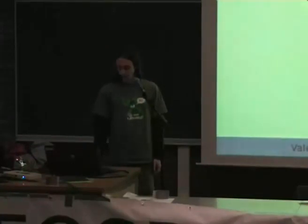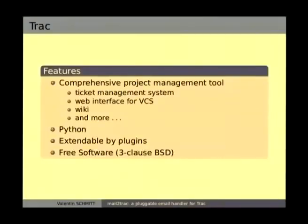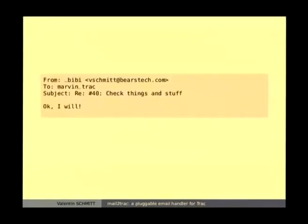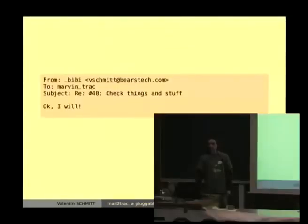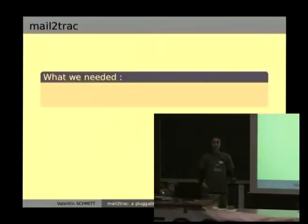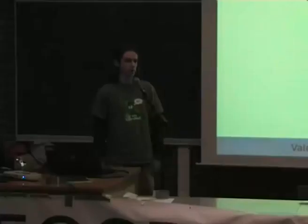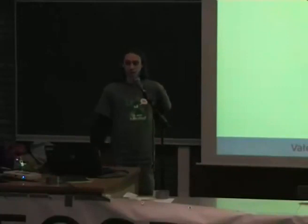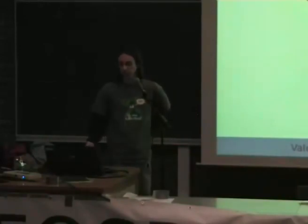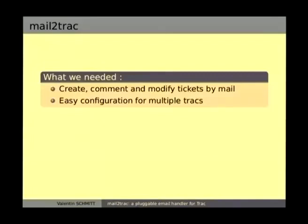About that: you can get email notifications when you're using Trac, which is quite convenient. But if you want to reply to one of these notifications, which is quite intuitive, this is basically what you get — nothing. We are using a lot of Trac instances at my company — about 170 Tracs running. So we needed to create, comment, and modify tickets using emails, and we wanted it to be easily configurable for multiple Tracs.